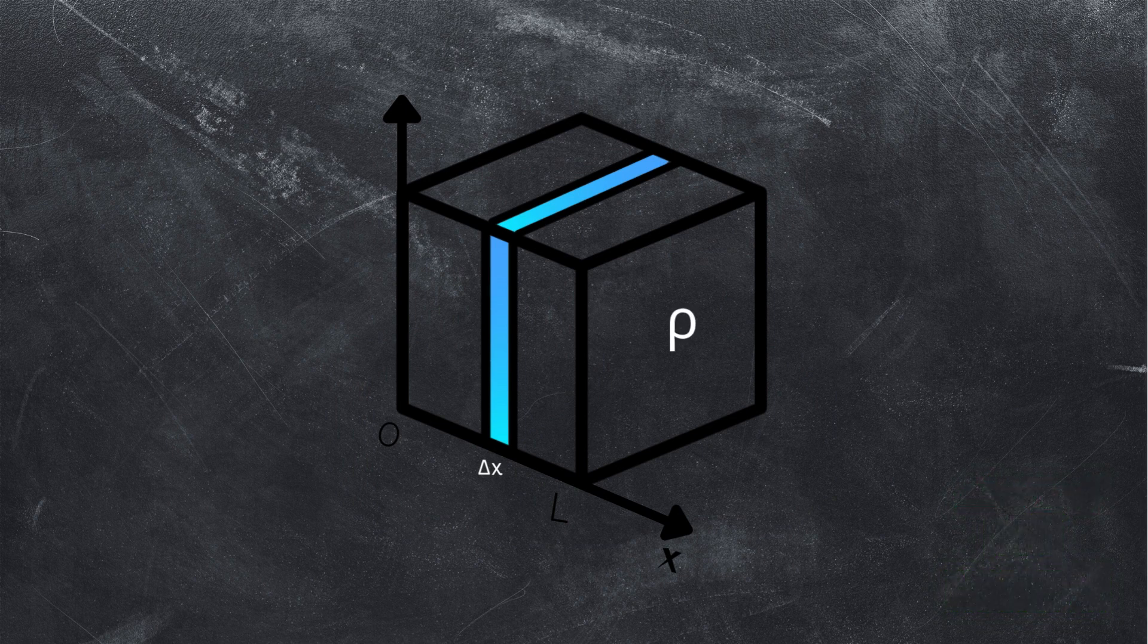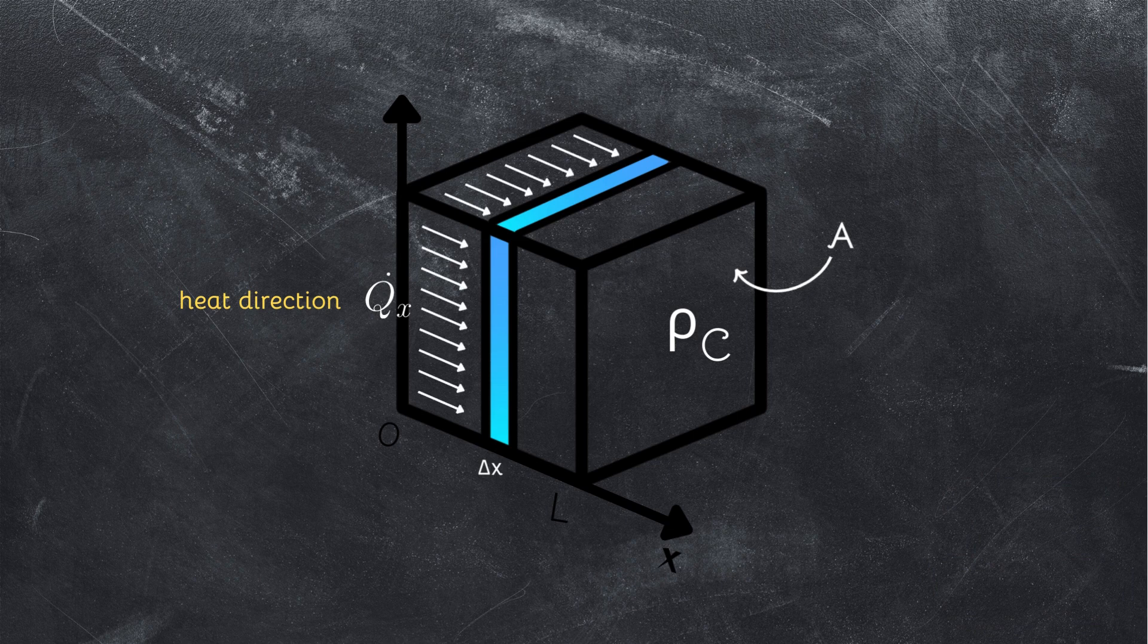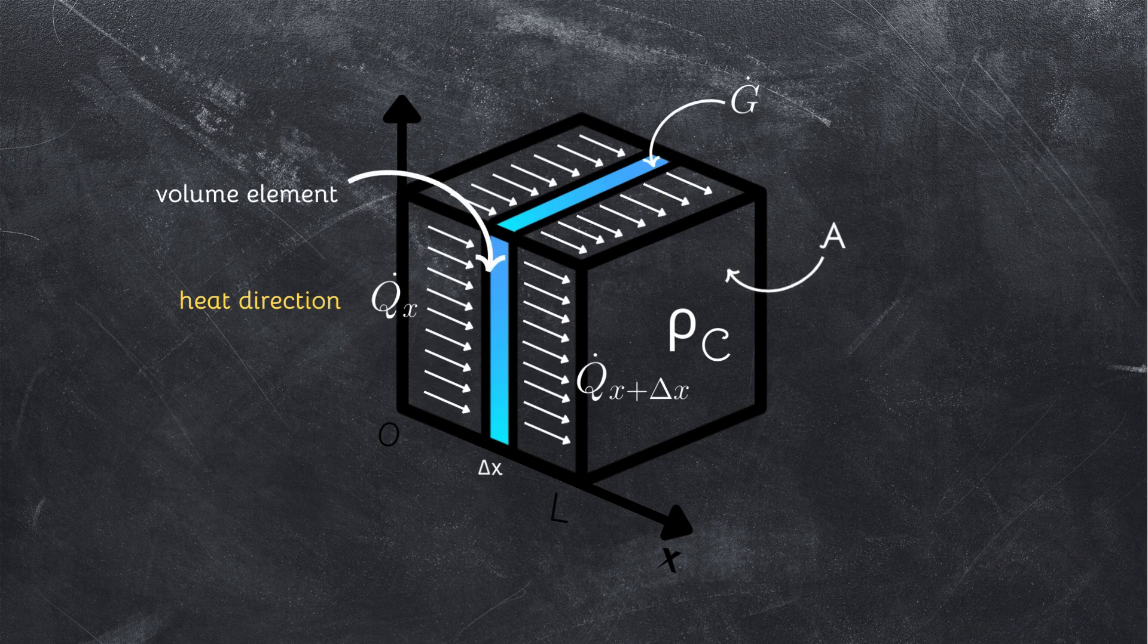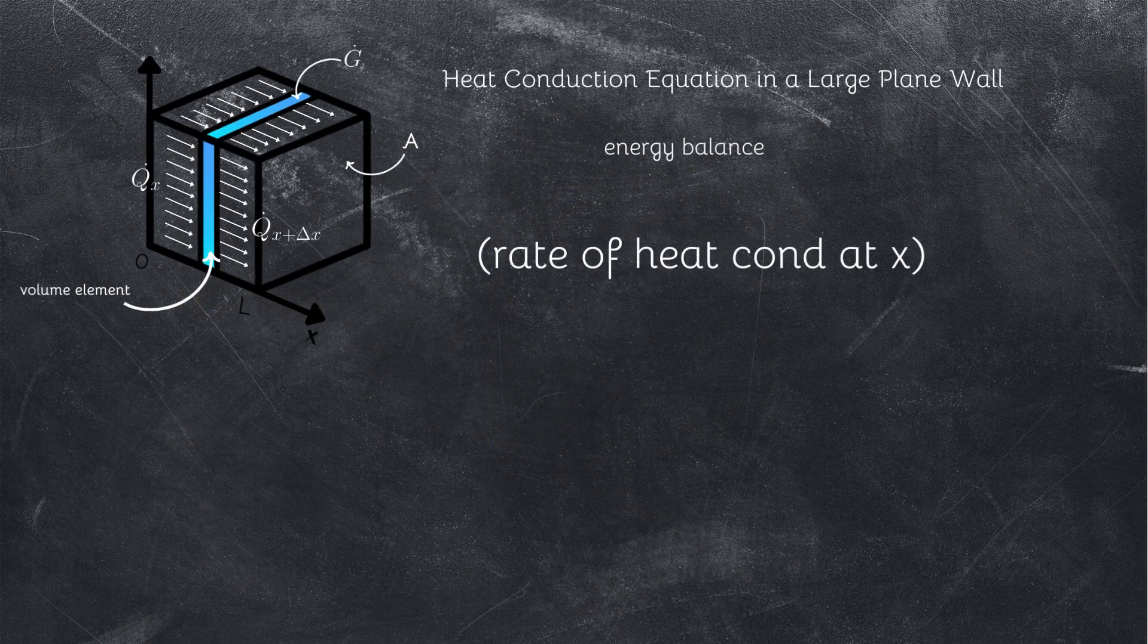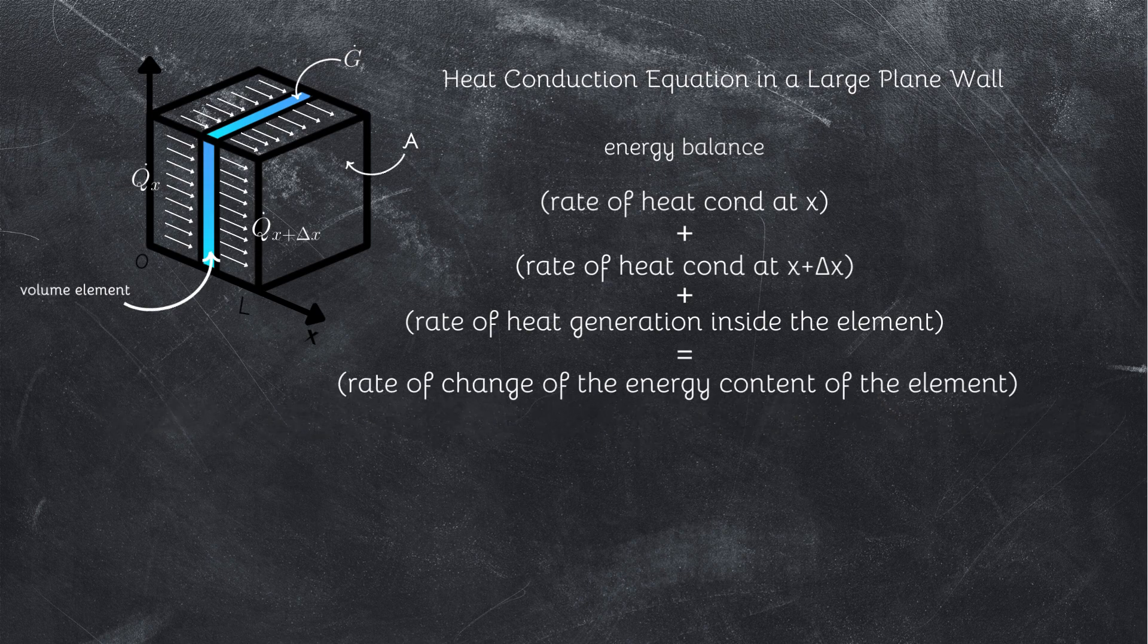Assume the density of the wall is rho, the specific heat is c, and the area of the wall normal to the direction of heat transfer is A. This is the direction of heat on each side, and the energy generated in the volume element. An energy balance on this thin element during a small time interval delta t can be expressed.